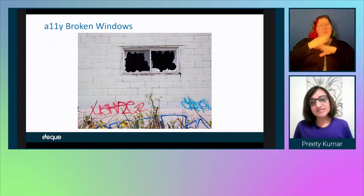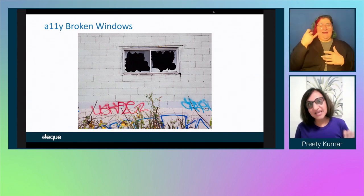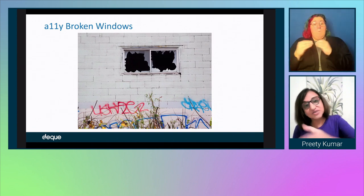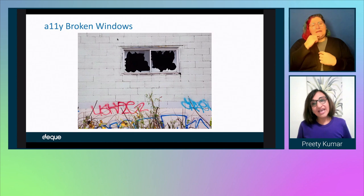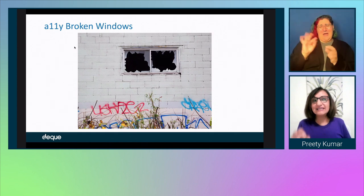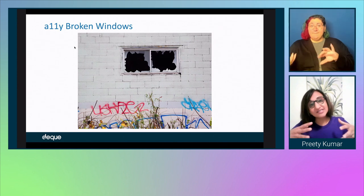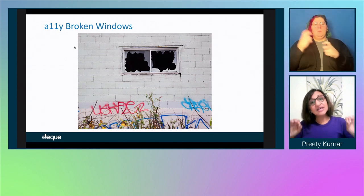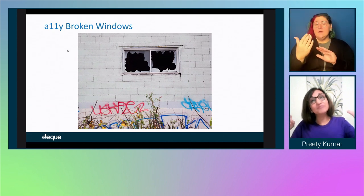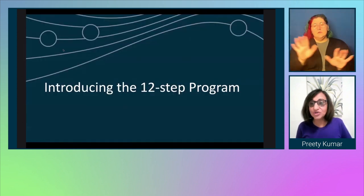The broken windows theory states that signs of disorder create an environment that actually encourages further disorder, including serious crimes. So if you look at accessibility, if you let minor issues sneak in, it creates disorder and allows bigger accessibility defects to creep in. It's up to you to target those accessibility bugs and not let technical debt build up. You can do this iteratively, in small iterations.